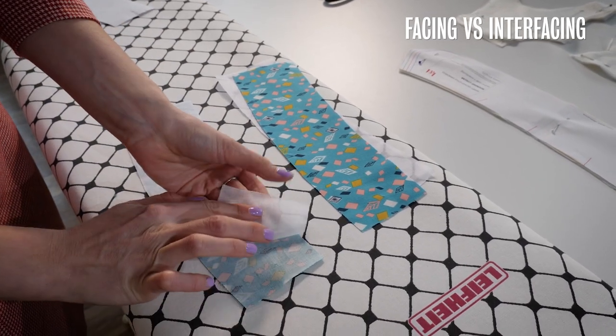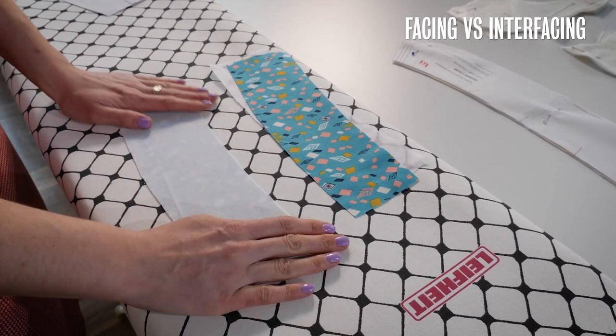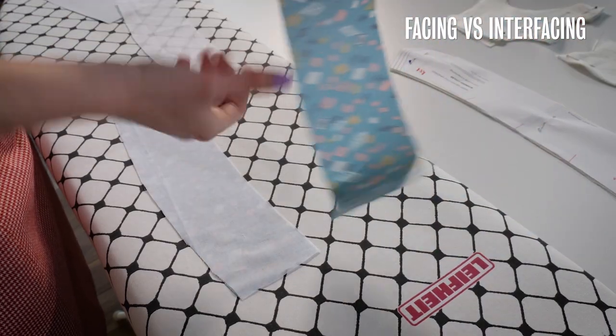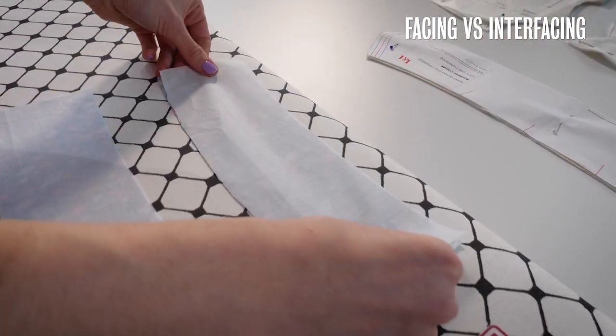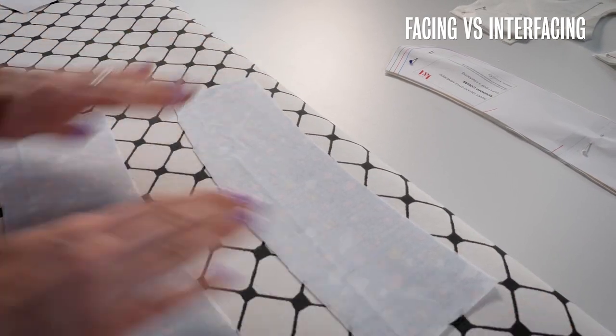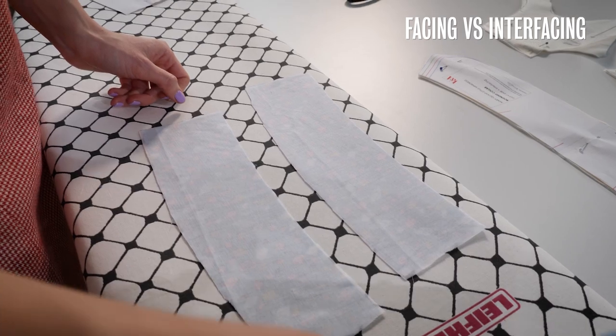So the most important thing is to make sure that you're putting the wrong side of the interfacing onto the wrong side of your fabric and the wrong side of the interfacing will feel slightly rough to the touch because that is the side of the fabric that has the glue on it which will stick to your fabric.